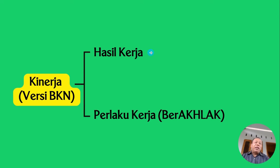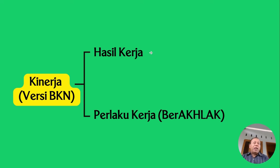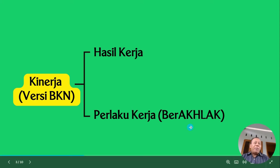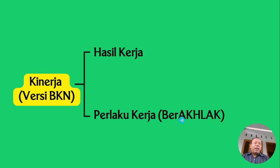Kinerja itu komponennya ada dua, yaitu hasil kerja dan perilaku kerja. Kalau guru, hasil kerjanya adalah tupoksi 5M: merencanakan, melaksanakan pembelajaran, melakukan evaluasi, membimbing siswa, dan melaksanakan tugas tambahan. Kemudian perilaku kerja — kalau pola lama namanya DP3, sekarang namanya perilaku kerja — disingkat BERAKHLAK, ada tujuh komponen: Berorientasi pelayanan, Akuntabel, Kompeten, Harmonis, Loyal, Adaptif, dan Kolaboratif.